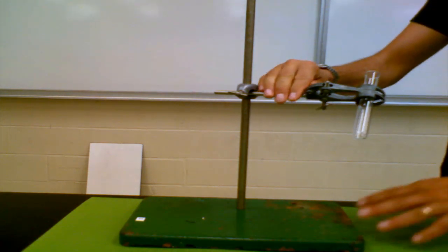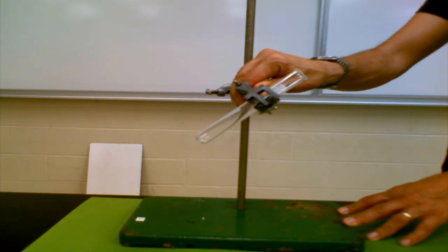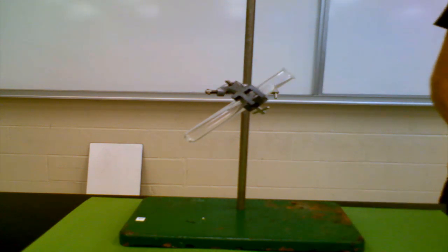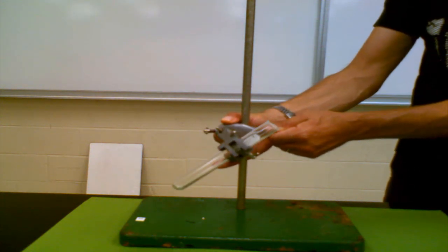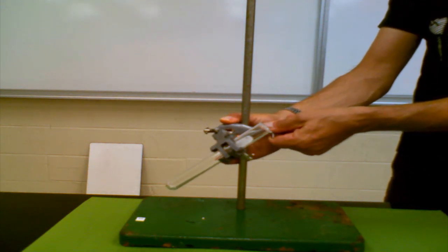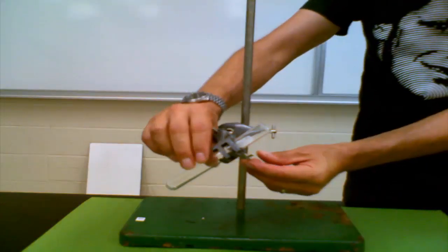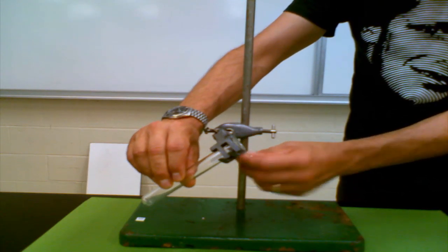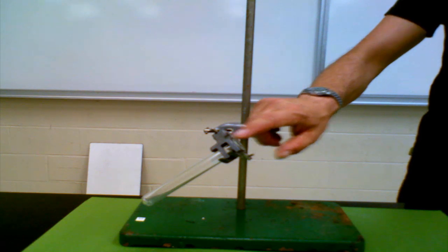Now many of you are going to want to put the test tube in the clamp in the middle. You want to avoid doing that because you don't know what's going to happen to the test tube when you're heating something up. So the safest thing to do is to slide that test tube down so that the lip is sitting right on the edge of the clamp.